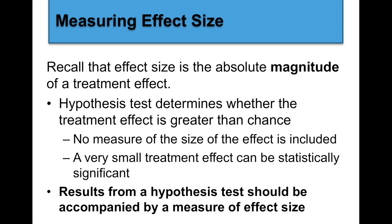How do we measure effect size? Recall that effect size is the absolute magnitude of the treatment effect — how effective is that treatment? The hypothesis test determines whether the treatment effect is greater than chance alone. A really small treatment effect can be statistically significant, so don't dismiss a study if they have a small effect size. Results from the hypothesis test should be accompanied by a measure of effect size. You will see that measure of effect size in all APA statements in the results section.